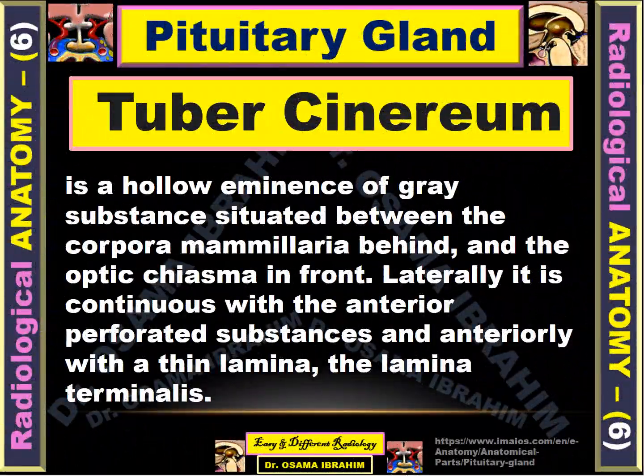The tuber cinereum is the hollow eminence of gray substance situated between the corpora mammillaria — meaning the mammillary body — behind, and the optic chiasm in front. Laterally it is continuous with the anterior perforated substance, and anteriorly with the thin lamina terminalis.